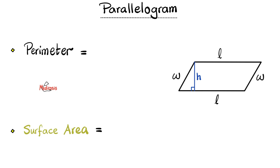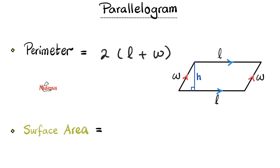The parallelogram — 'gram' because it's a drawing or diagram, and 'parallelo' because everything is parallel here. This L is parallel to that L, and this width is parallel to that width — that's why it's a parallelogram. The perimeter is 2 multiplied by (length plus width), just like the perimeter of the rectangle, because a parallelogram is nothing more than a knotty rectangle.